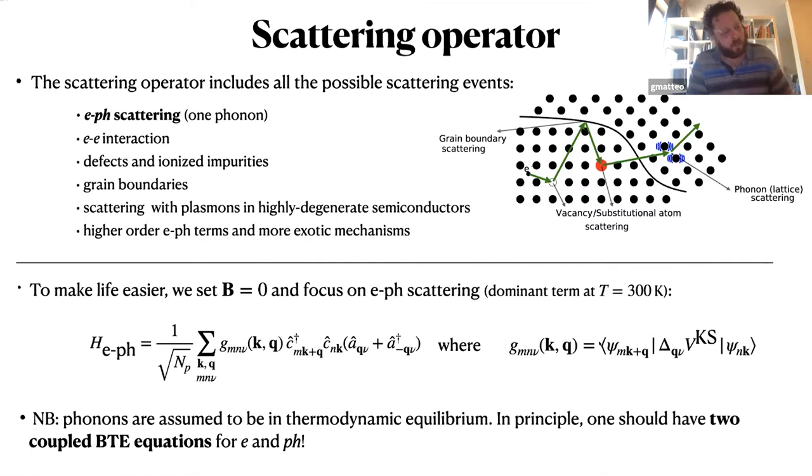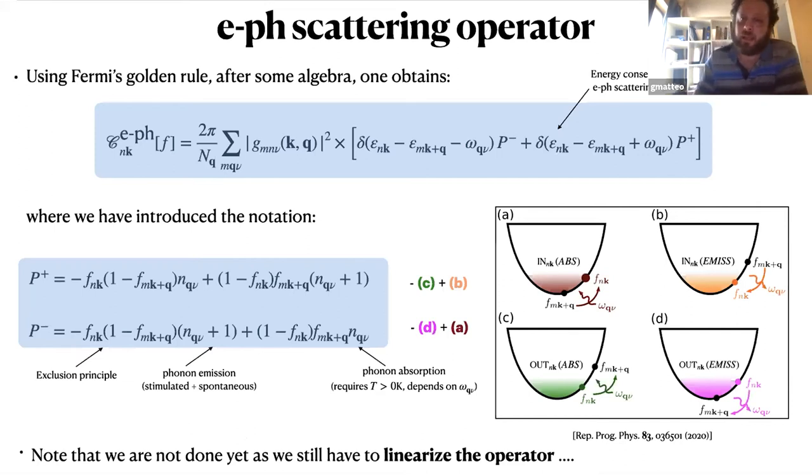Another point that I would like to stress at this level is that, in principle, one should have another equation for phonons. Electrons and phonons are coupled, so these two equations are coupled, and phonons scatter through non-anharmonic terms. So, to make life easier, we completely neglect this second equation. We assume that phonons are in equilibrium, but it's important to include this equation for the thermal part.